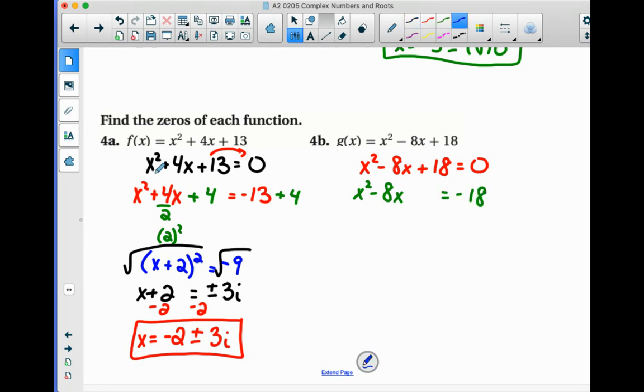Complete the square. Half of negative 8 is negative 4. Squared is positive 16. All right. So we'd have x minus 4 squared equals negative 2.